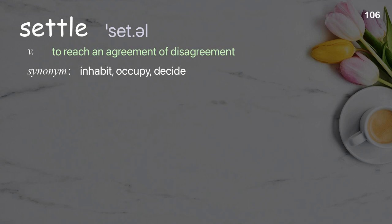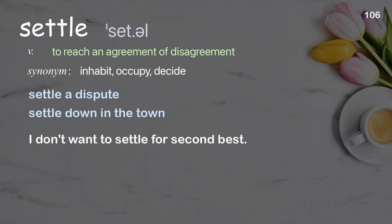Settle: to reach an agreement or disagreement. Examples: settle a dispute, settle down in the town. I don't want to settle for second best.